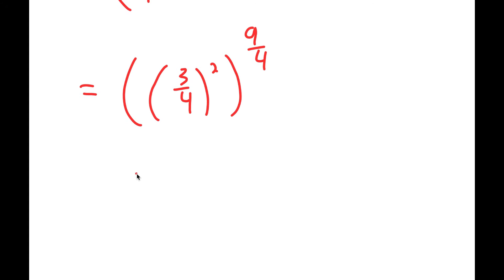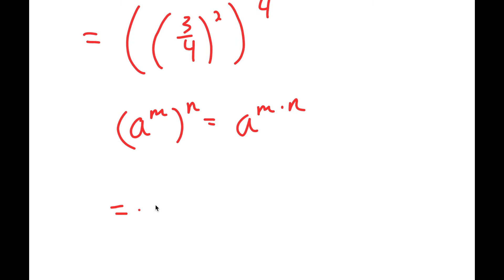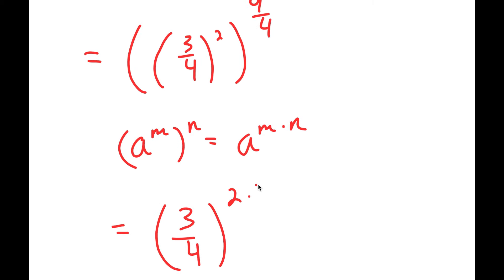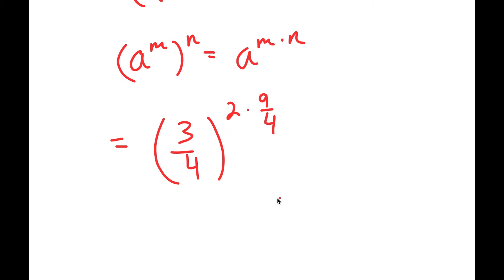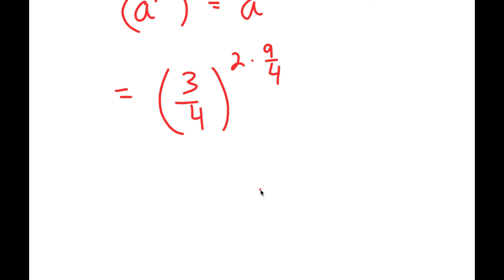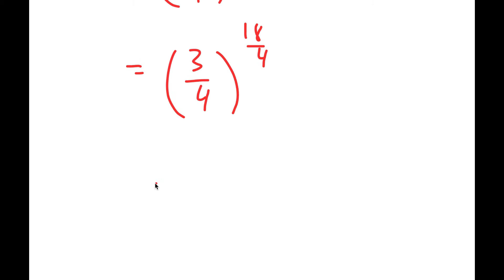Now, if I have something in the form a to the power of m to the power of n, this is equal to a to the power of m times n. So this turns into 3 over 4 to the power of 2 times 9 over 4, which is 3 over 4 to the power of 18 over 4, which simplifies to 3 over 4 to the power of 9 over 2.